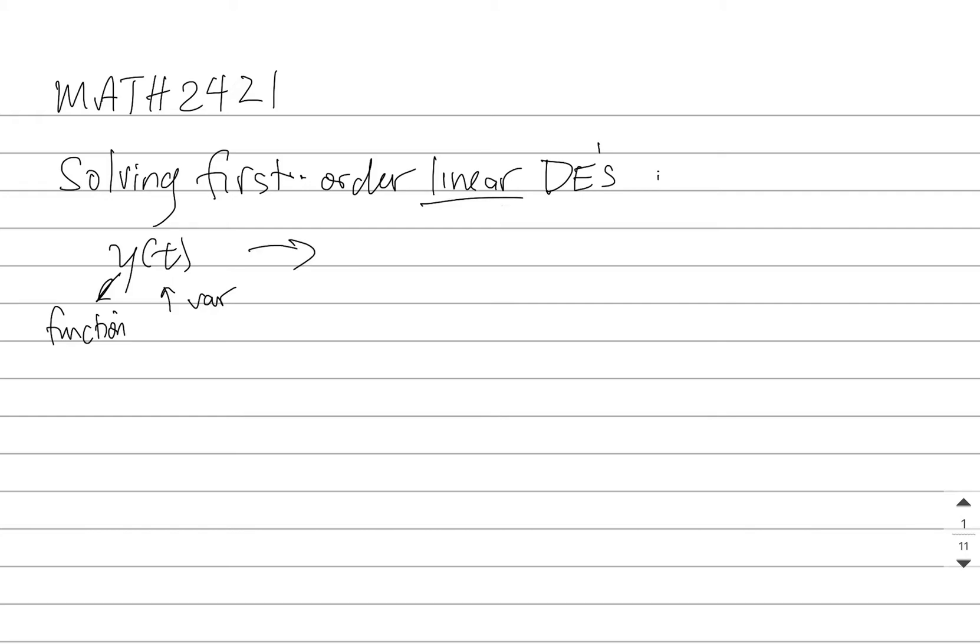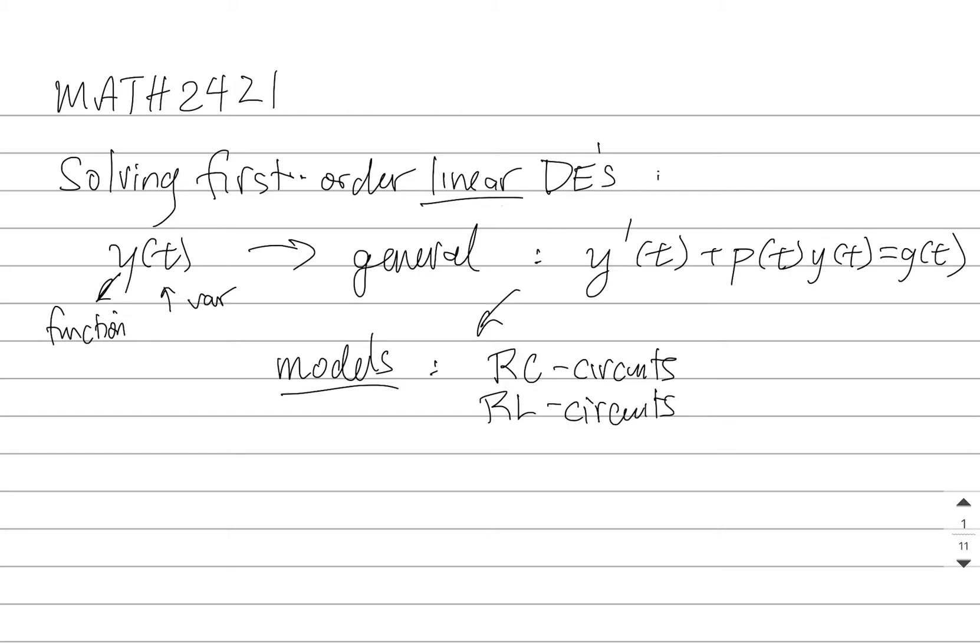The worst that a general first-order equation could look is like this: y'(t) + P(t)y = g(t). These are models for what are called RC circuits and RL circuits in engineering.